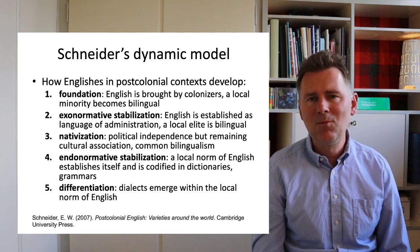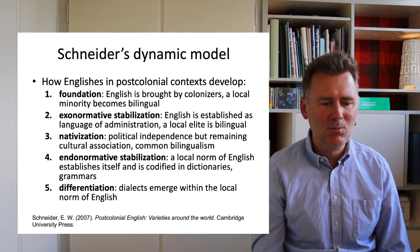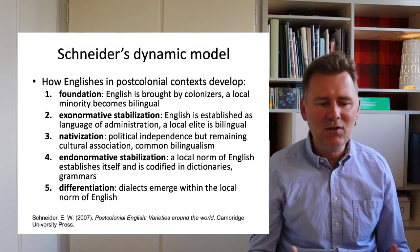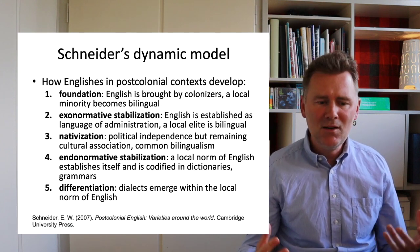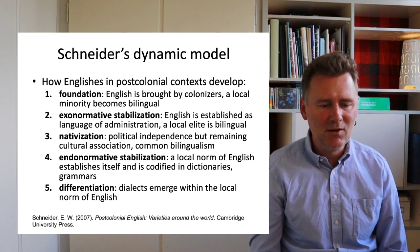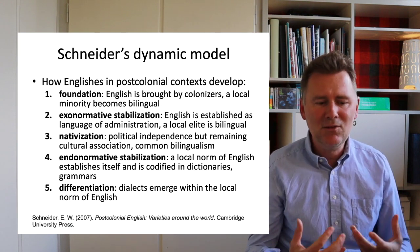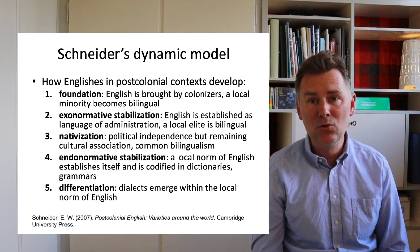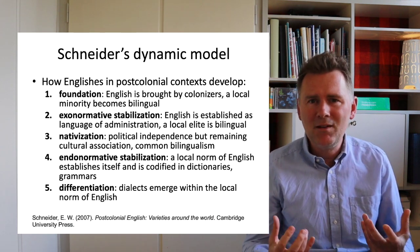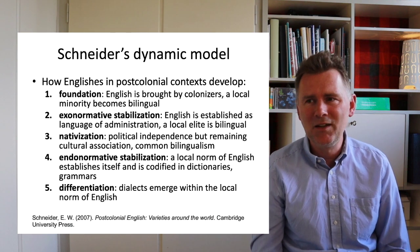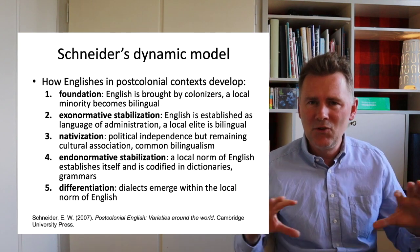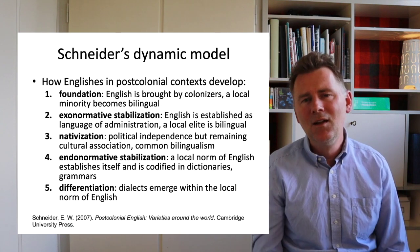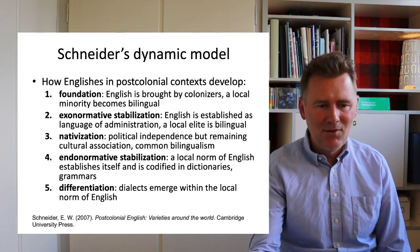Once endonormative stabilization has taken place, we're moving into stage five: the stage of differentiation. Within a new variety of English, new varieties and new dialects emerge within that local norm. There are by now different ways of speaking Malaysian English — Malaysian English has diversified into a variety that comprises several dialects.